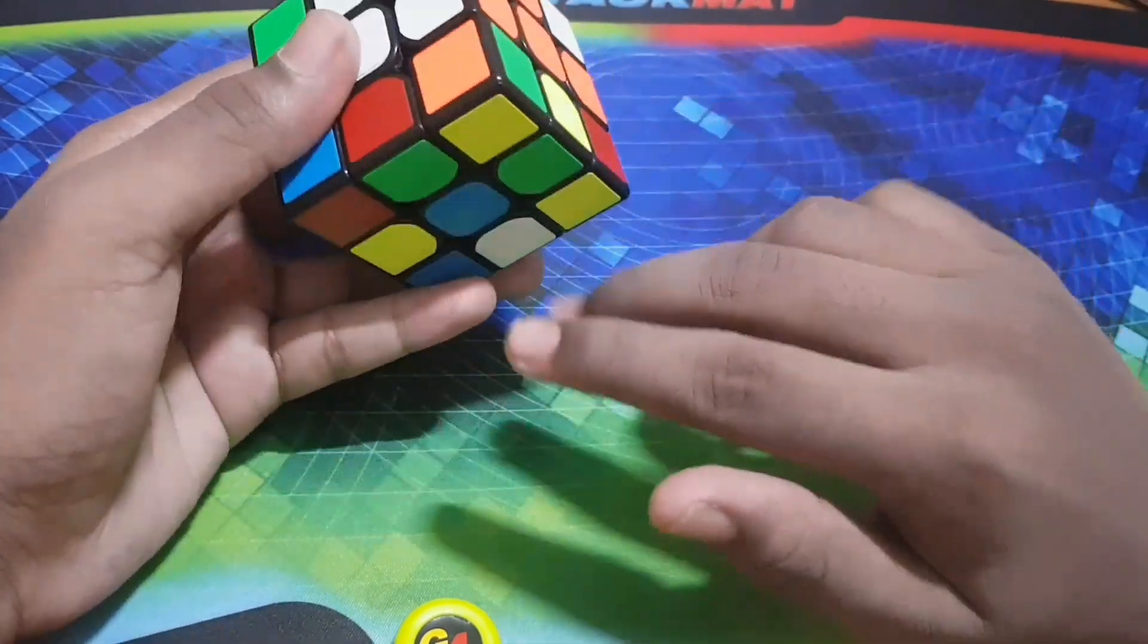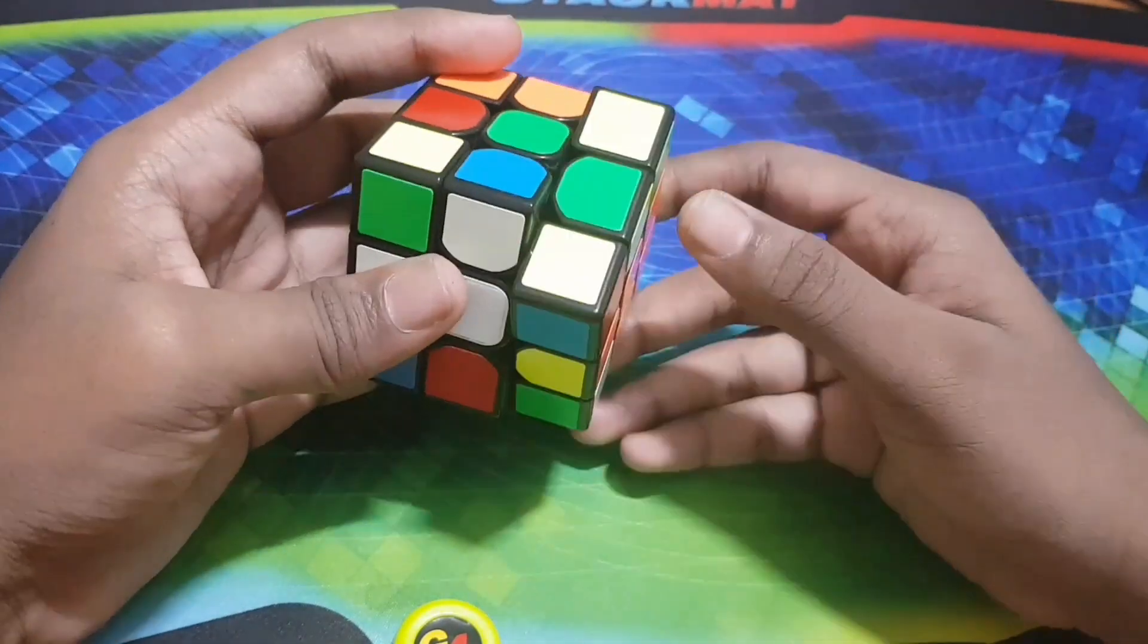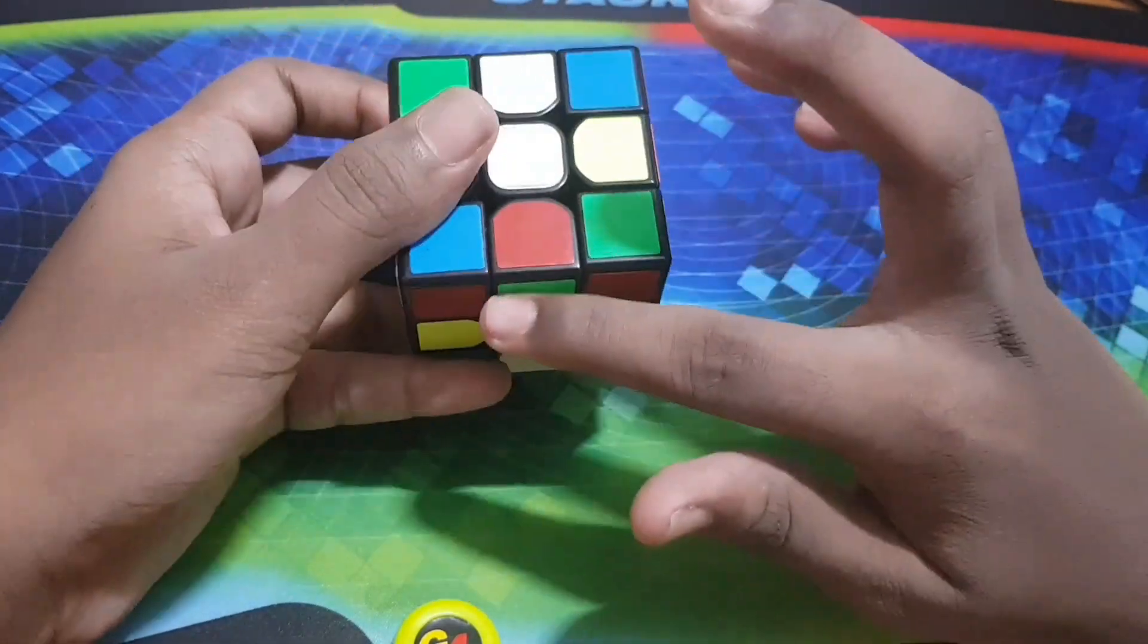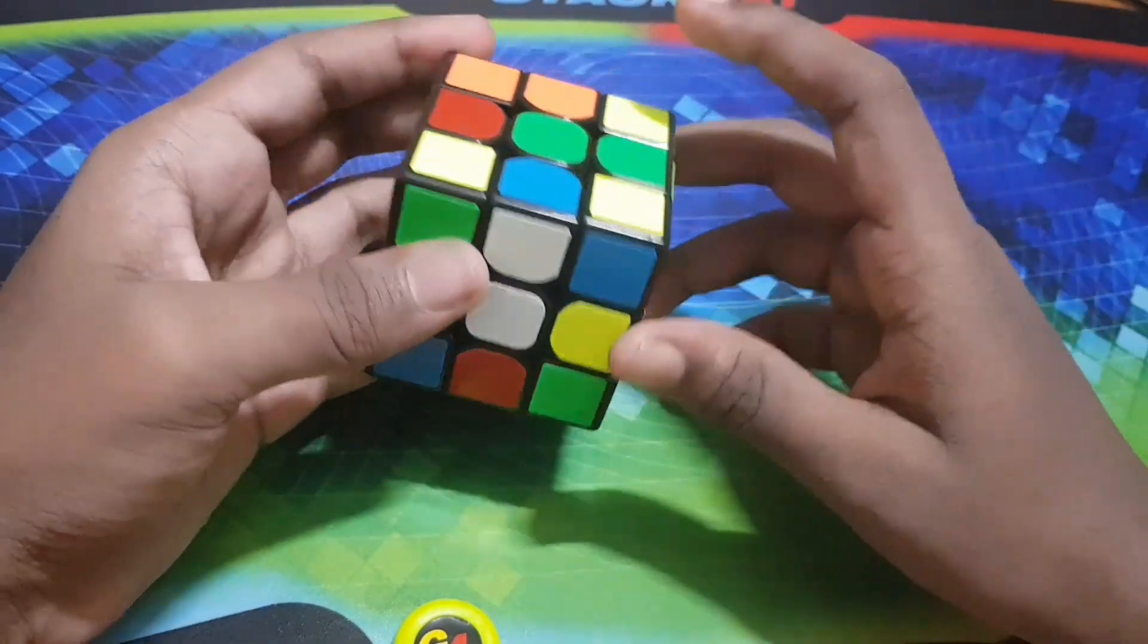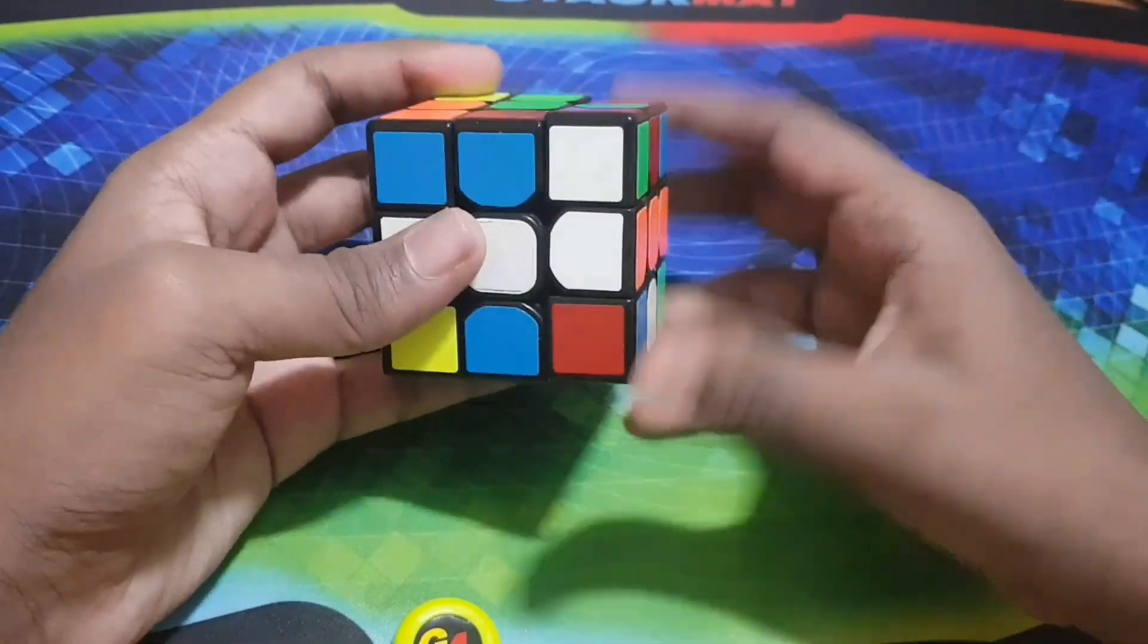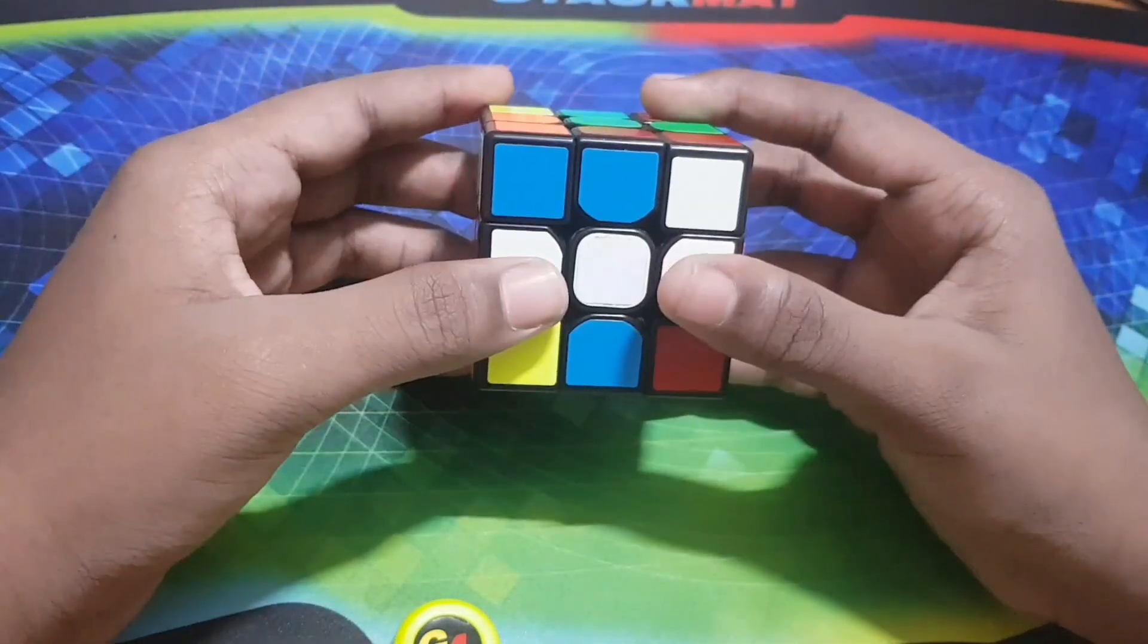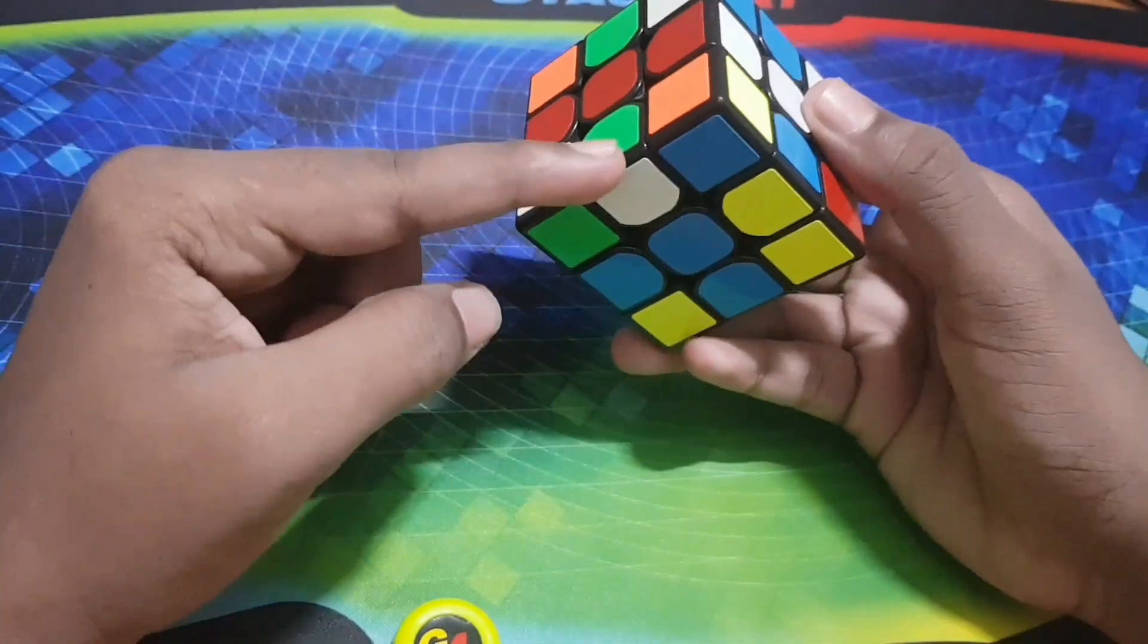What we can do is bring this green color here and then these both must be exchanged. So I can just do the same thing, that is a U prime and D, and again do an R2. Another edge that is going to exchange with this one.